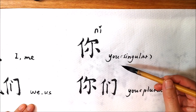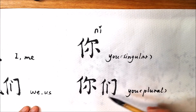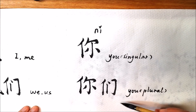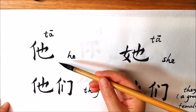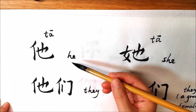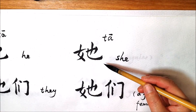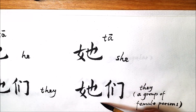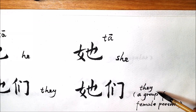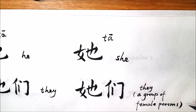你 is singular you. 你们 is the plural you. 他 means he. 他们 means they. 她 means she, but 她们 refers to a group of female persons.